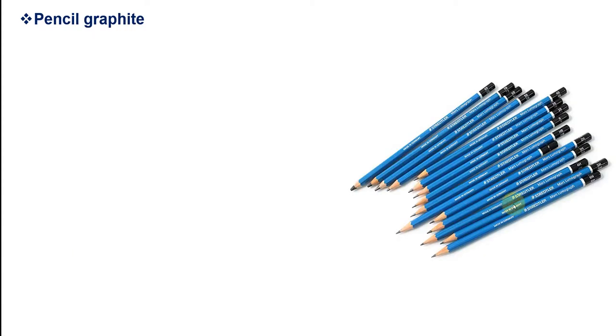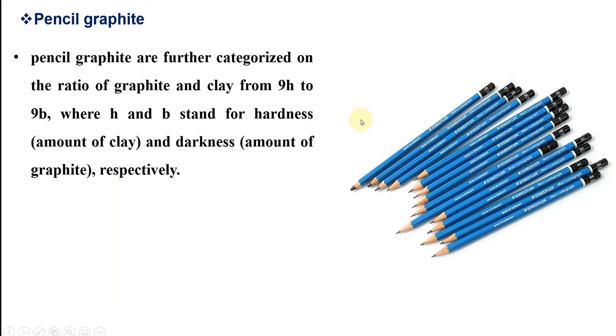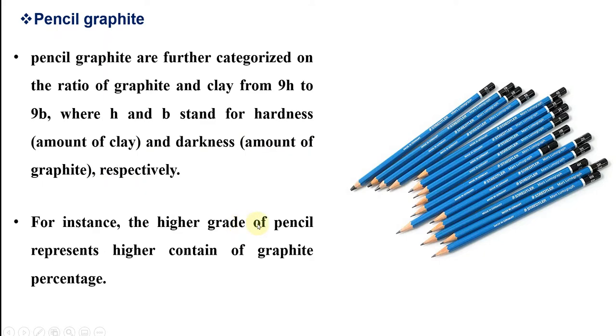Let's look at the common pencil that we use every day. Graphite pencils are characterized on the ratio of graphite and clay from 9H to 9B, where H and B stand for hardness (amount of clay) and darkness (amount of graphite). Higher grade pencils have higher amounts of graphite and you will get higher amounts of graphene.